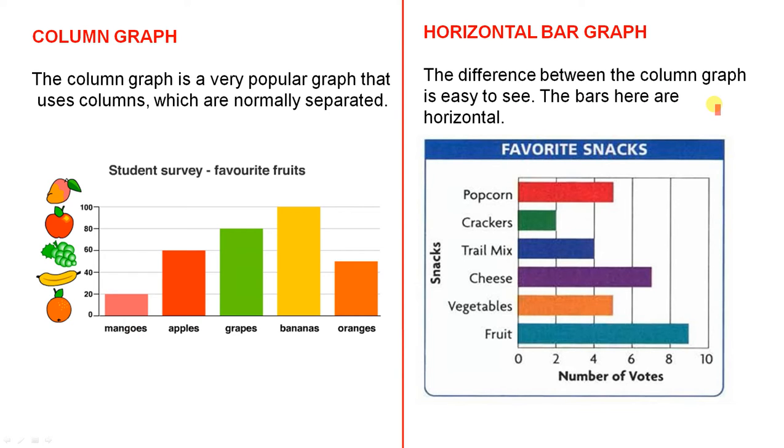Here is the horizontal bar graph. The difference between the column graph is easy to see. The bars here are horizontal. So it's exactly the same principle.